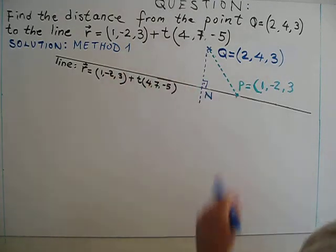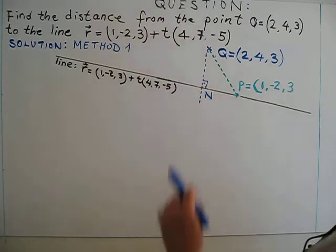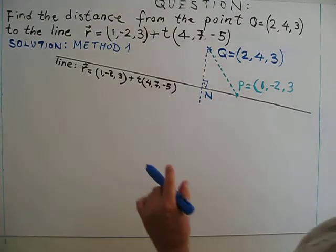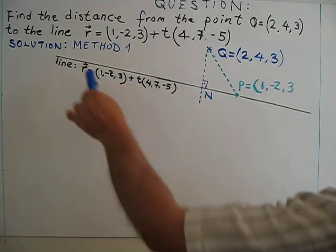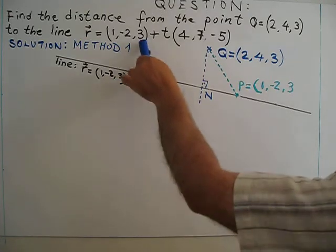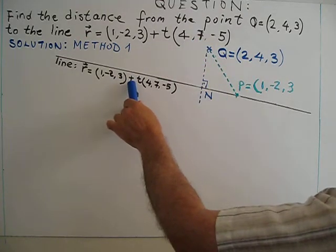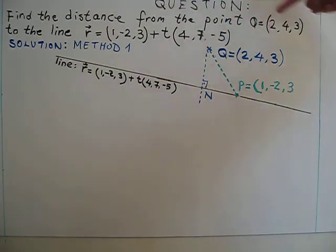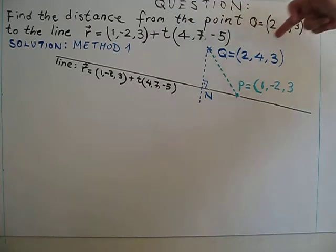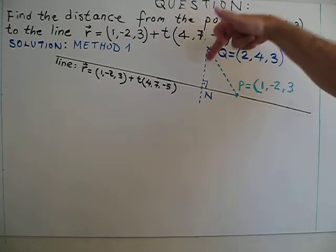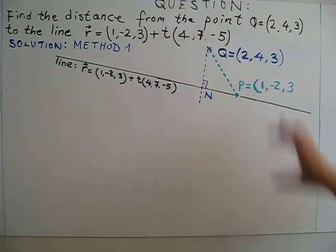So if I draw a diagram, so this is the line. This is the vector equation: (1, -2, 3) plus t(4, 7, -5). So this is the point - this point (2, 4, 3) is the x-coordinate, y-coordinate, z-coordinate.